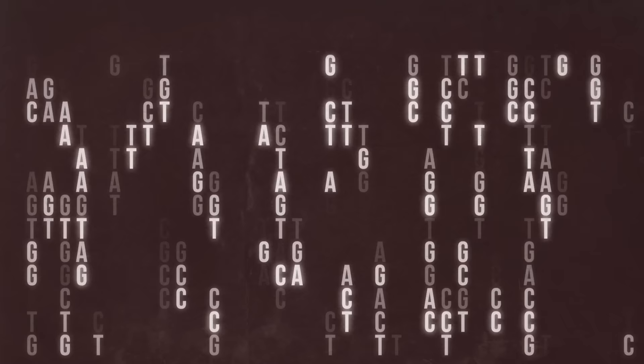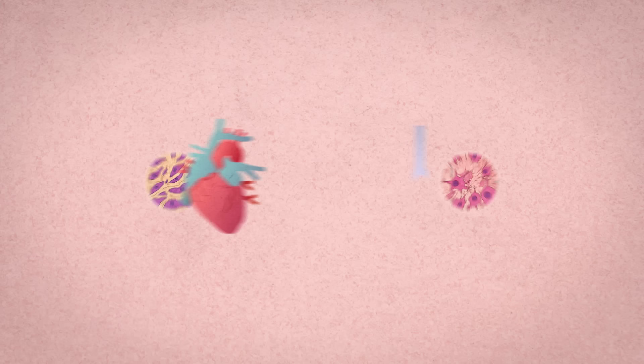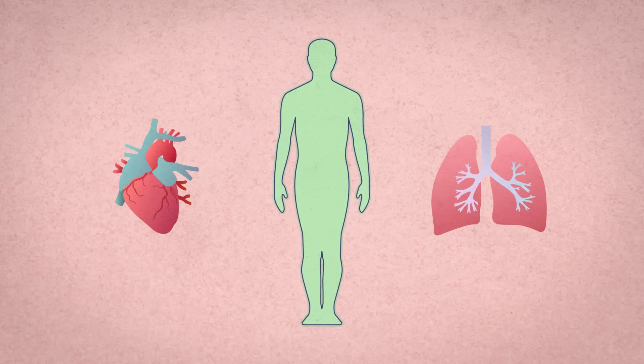Your genome is the code that your cells use to know how to behave. Cells interacting together make tissues. Tissues cooperating with each other make organs. Organs cooperating with each other make an organism. You. So, you are who you are in large part because of your genome.